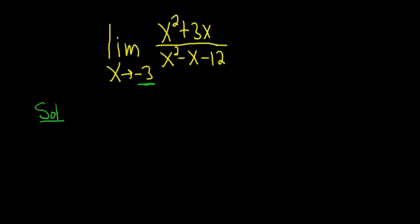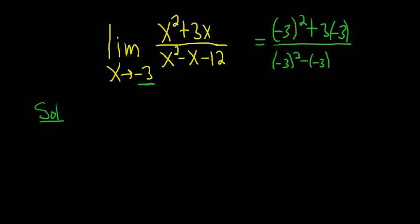So if you plug in negative 3, you would get negative 3 squared plus 3 times negative 3 over negative 3 squared minus negative 3 minus 12. So the part that's interesting is the bottom piece. Here you would get 9 plus 3 minus 12. So you get 12 minus 12, so you get 0.